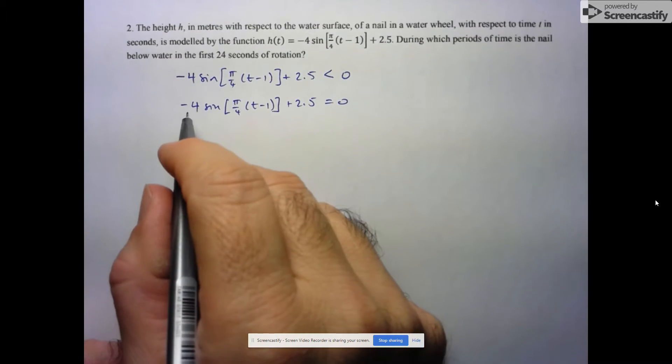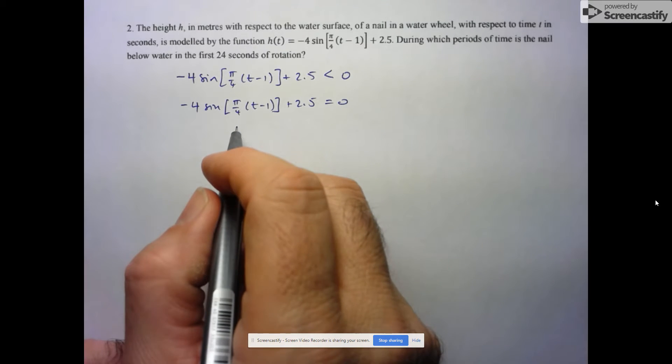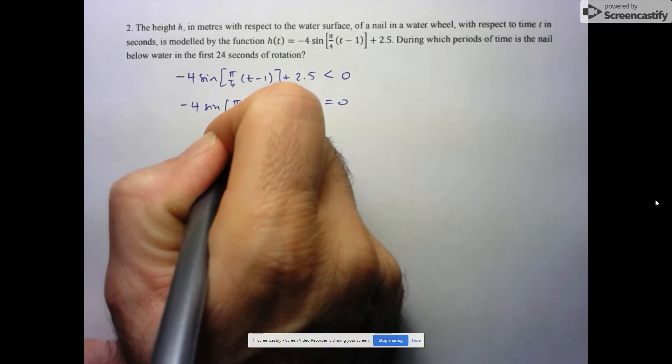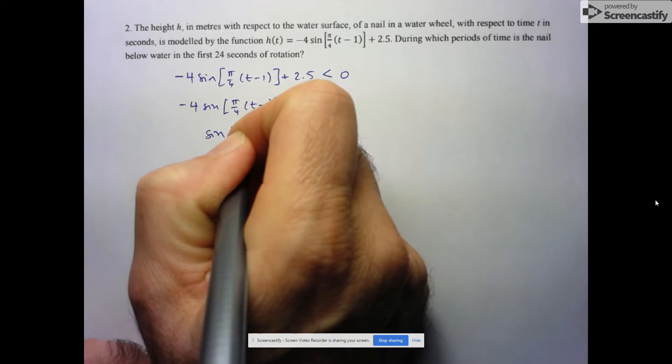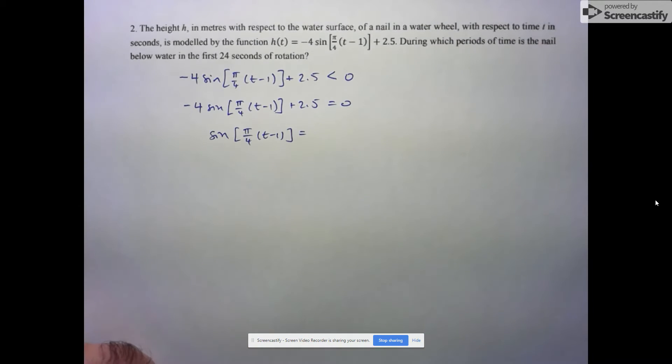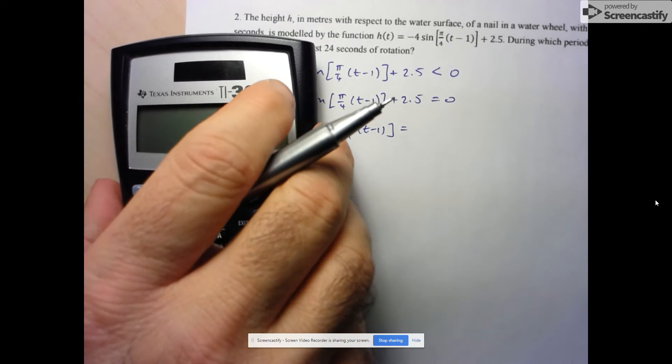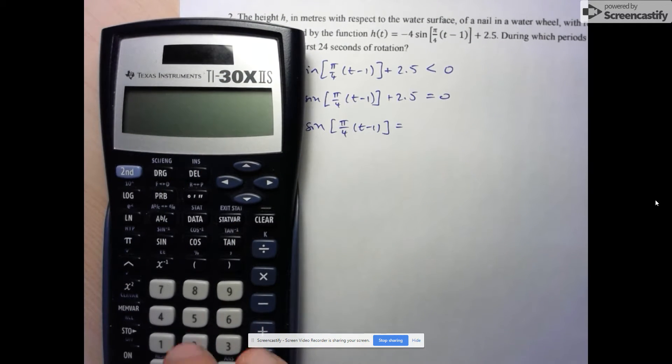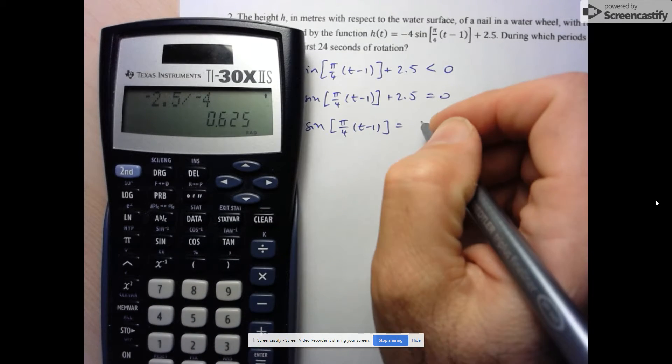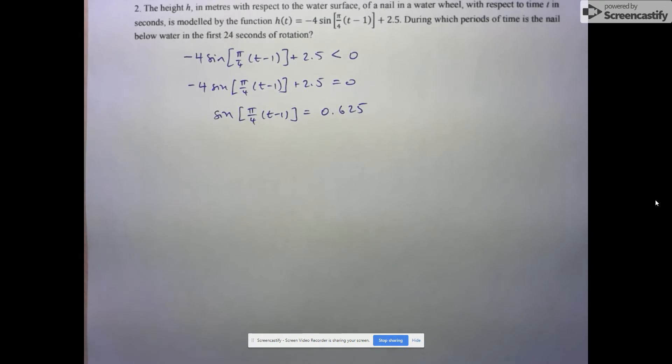This is a linear trigonometric equation, so we can just solve for the trig ratio first. Let's solve for the sine ratio here. Sine of pi over 4, t minus 1, is equal to... we'll bring over the 2.5 divided by negative 4. So negative 2.5 divided by negative 4 gives us 0.625.